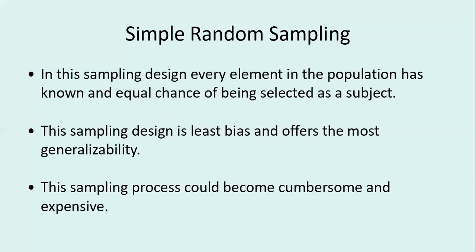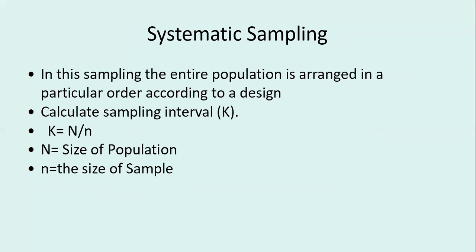Simple random sampling is an unrestricted sampling and is a very good probability sampling. Now we come to restricted sampling. The first type is systematic sampling. In systematic sampling, the entire population is arranged in a particular order according to a design — you can arrange it in ascending or descending order.